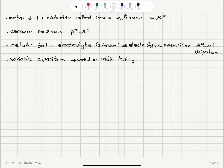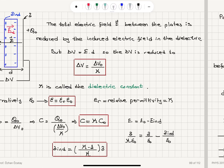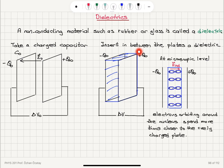For typical capacitors: a metal foil plus a dielectric rolled into a cylinder gives capacitance on the order of microfarads. Using ceramic materials as the dielectric gives picofarads to microfarads. An electrolytic capacitor — a metallic foil plus an electrolyte solution — gives microfarads to millifarads but has unipolar behavior, meaning it can only be charged in one direction. Variable capacitors, or varactors, have adjustable capacitance and are used in radio tuning to tune the resonance frequency of an oscillator.